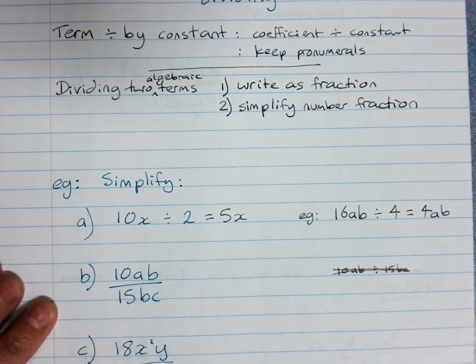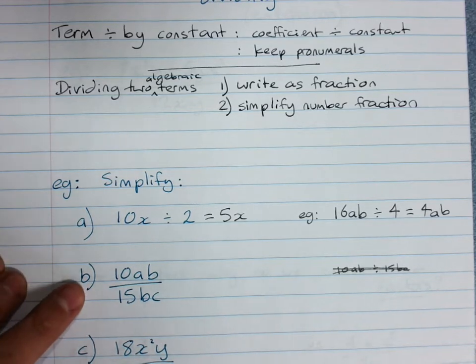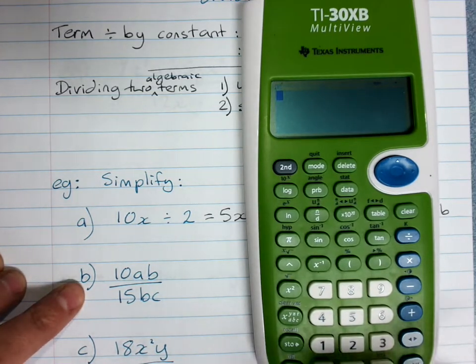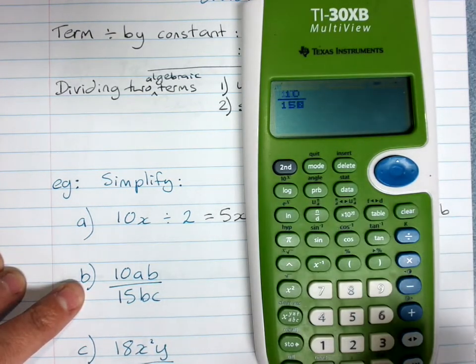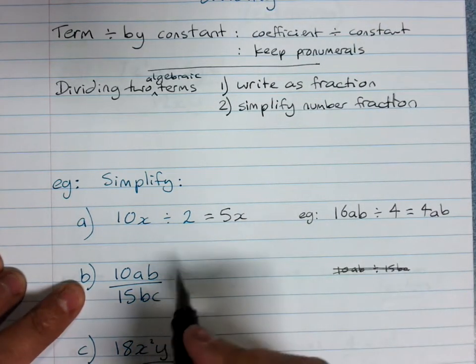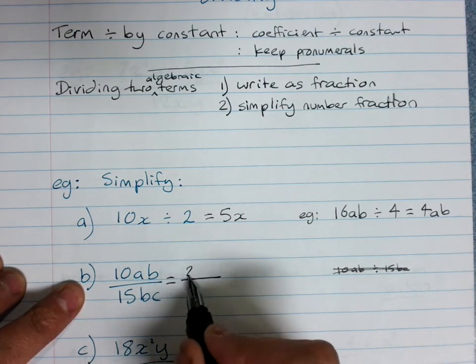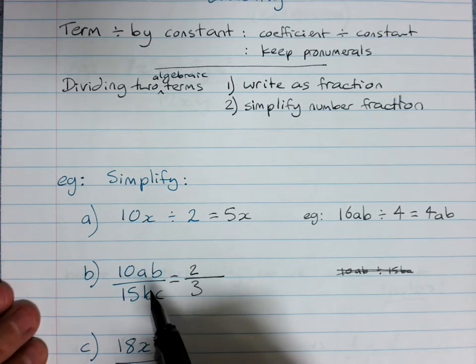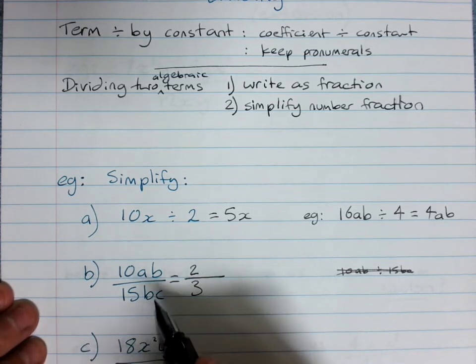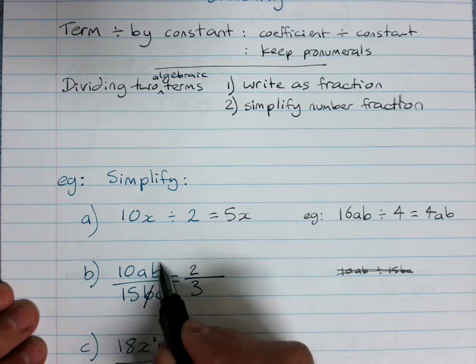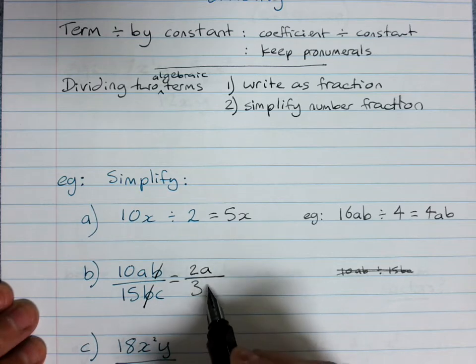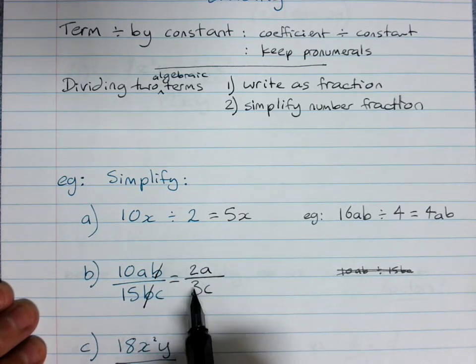Simplify the number fraction. So here I've got 10 over 15. And remember, if you can't remember how to simplify it, use your fraction key. 10 over 15, that's 2 over 3. So my answer will have a 2 over a 3. Then cancel out any letters that are on the top and bottom, but only one at a time. B divided by B cancels out, and what I'm left with is A on the top and C on the bottom, so I've got 2A over 3C.